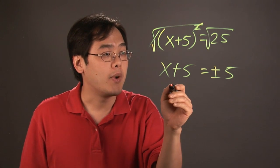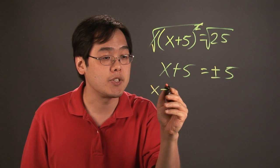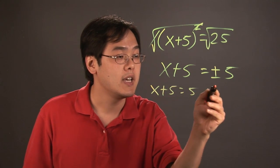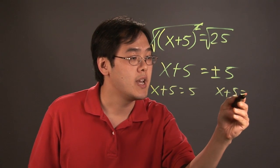So, what happens here is you have to break it up into two separate equations: x + 5 = 5, and x + 5 = -5.